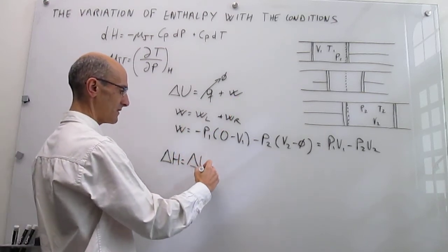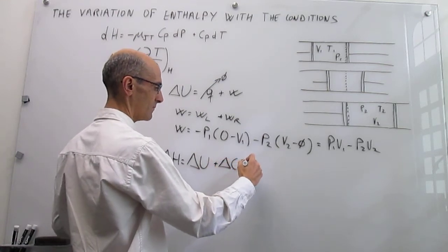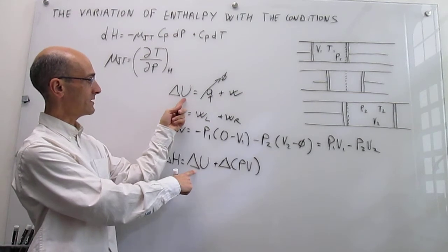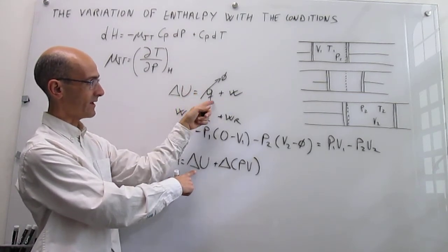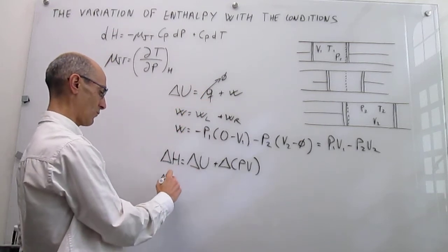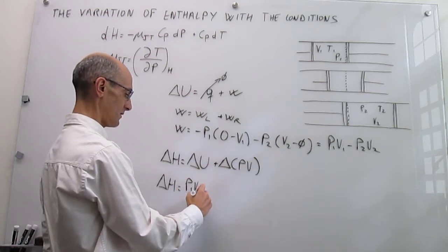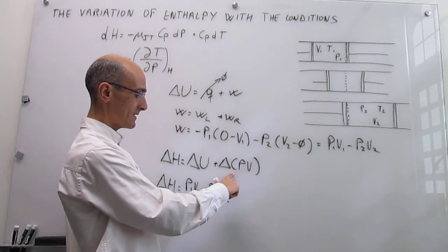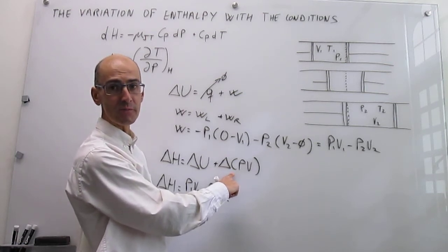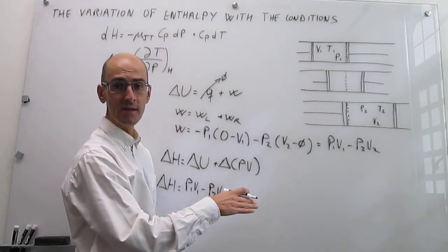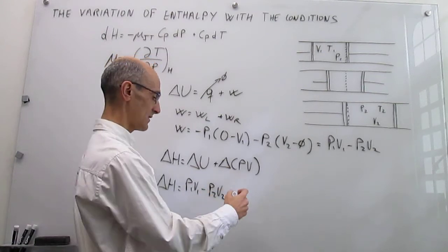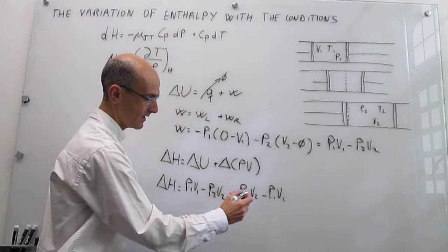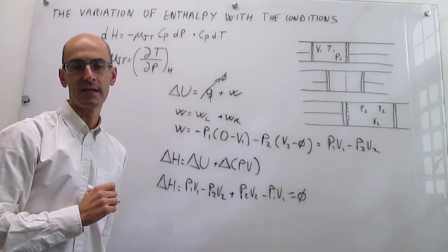The definition of enthalpy is the change in internal energy plus the change in the pressure-volume product. We just calculated the change in internal energy: it equals P1V1 minus P2V2, since the process is adiabatic with no heat. The change in the PV product is P2V2 minus P1V1. Adding these together, the change in enthalpy is zero. This is indeed an isenthalpic process.